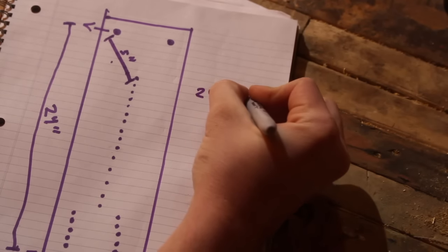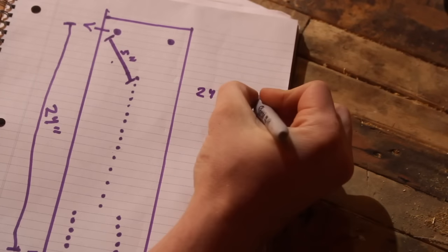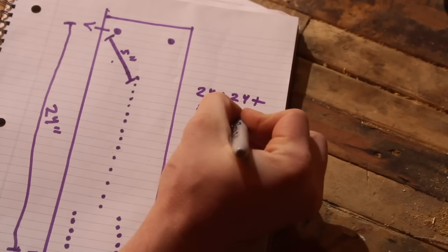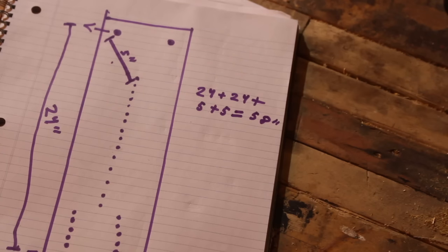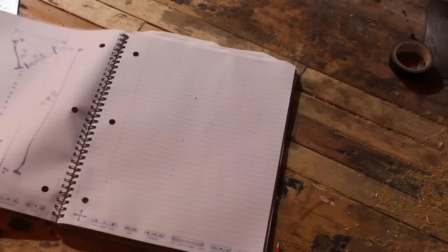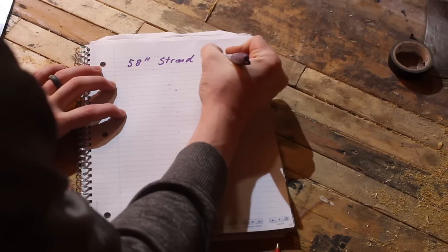And now that we've got the length of the strands we need to figure out how long of a bowstring this will actually make. Here I have 58 inches on my strands and so the numbers we need to do is we need to subtract 17 inches from the full strand length.